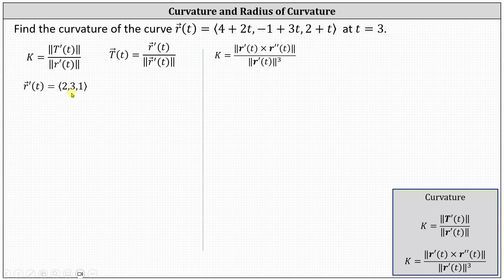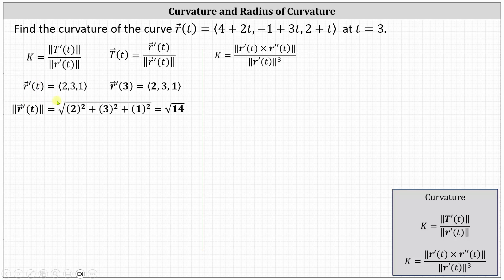The y component equals the derivative of negative 1 plus 3t with respect to t, which is 3. And the z component is equal to the derivative of 2 plus t with respect to t, which is 1. Notice the vector function r prime of t, regardless of the value of t, is equal to the constant vector ⟨2, 3, 1⟩, which indicates r prime of 3 is the same vector. The magnitude of r prime of t equals the square root of the sum of the squares of 2, 3, and 1, which gives us the square root of 14.